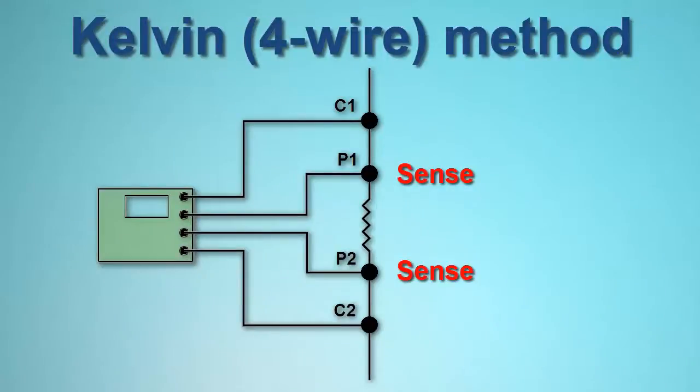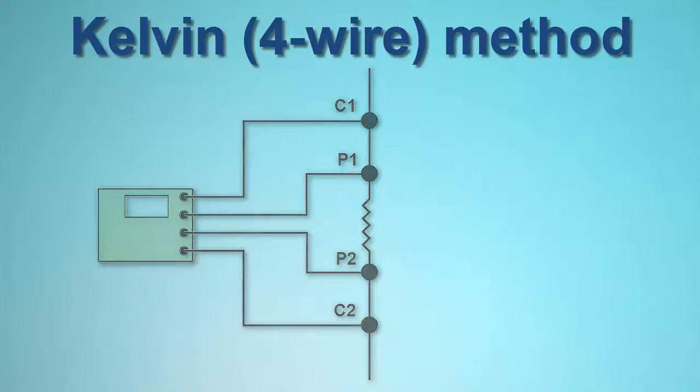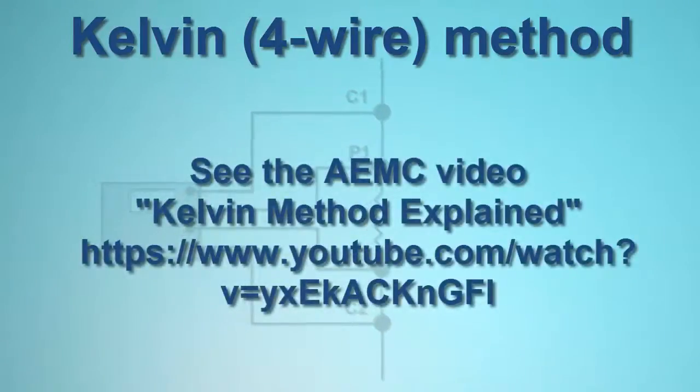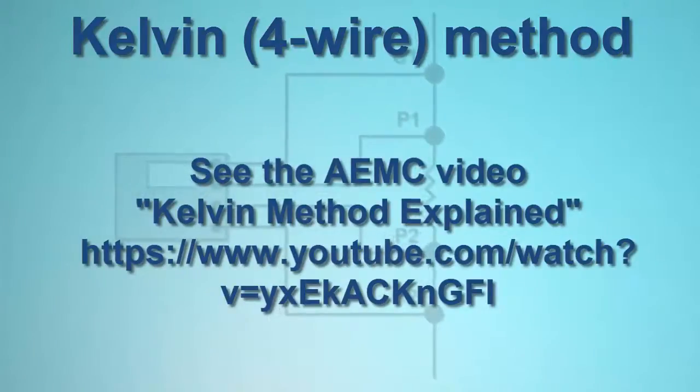There is virtually no current flowing through the sense leads. Nearly all the current flows through the source leads. This allows for a high level of measurement sensitivity and accuracy when the load under test is of low resistance.